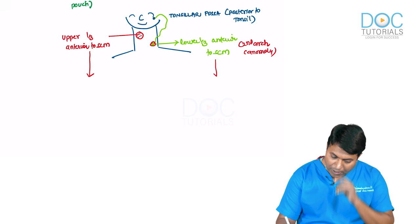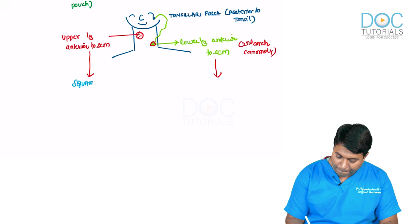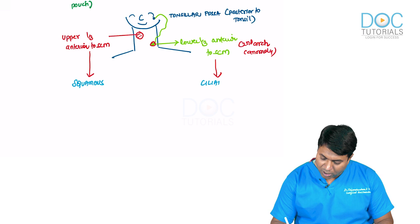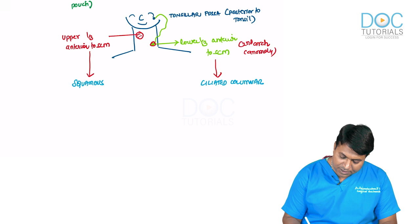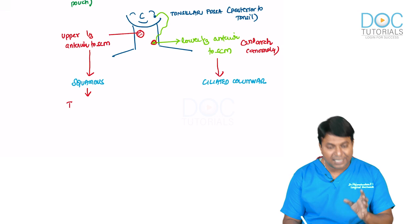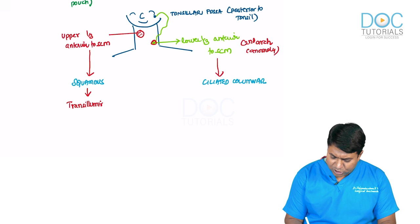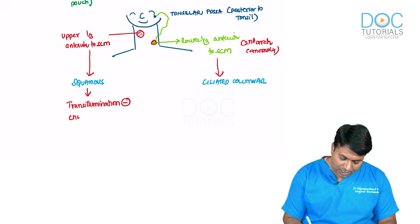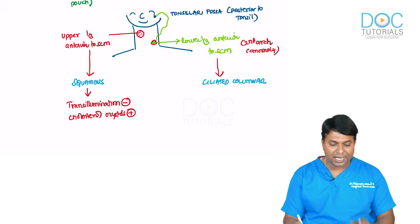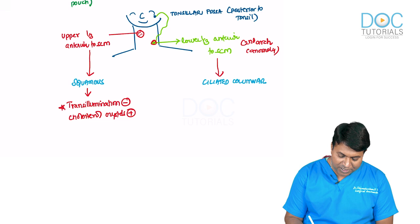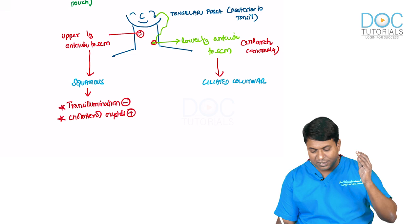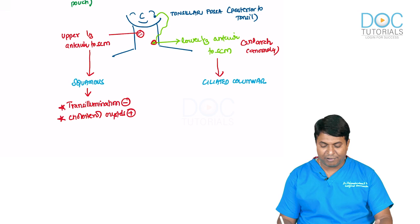The branchial cyst is lined by squamous epithelium, whereas the branchial fistula is lined by ciliated columnar epithelium. The branchial cyst is transillumination negative — though it is a liquid swelling, it contains thick fluid. It contains cholesterol crystals, which is a repeat MCQ. Compare with hydrocele, which also has cholesterol crystals but is transillumination positive.